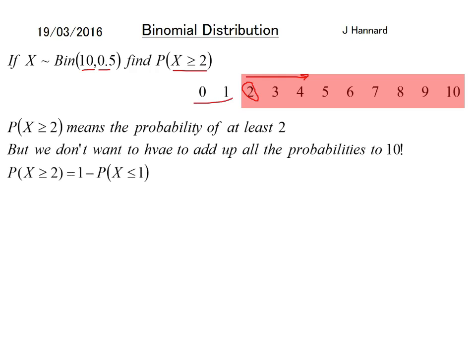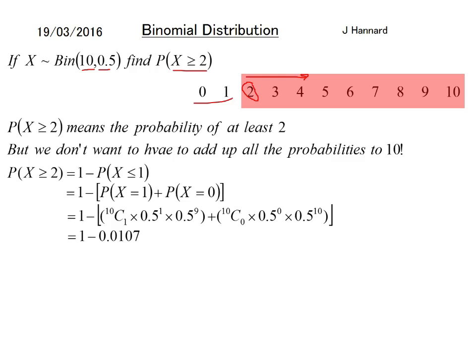P of X is greater than or equal to 2 equals 1 minus the probability of X being less than or equal to 1, which is 1 minus the probability of X equal to 1 add the probability of X equal to 0, which is 1 minus 10C1 times 0.5 to the 1 times 0.5 to the 9 add 10C0 times 0.5 to the 0 times 0.5 to the 10, which equals 1 minus 0.0107, which is 0.9893.